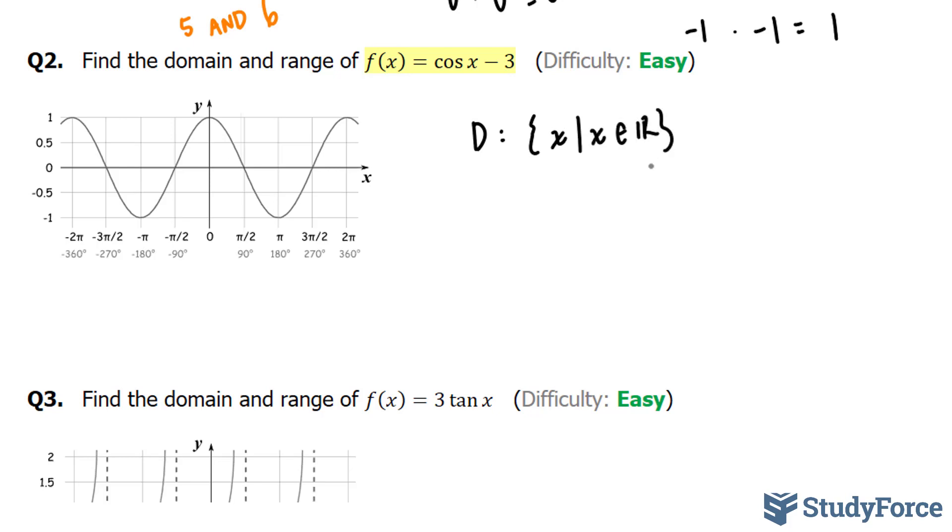But the range, on the other hand, given that we have this -3, means that every y value will be minused by 3. Therefore, since it is between 1 and -1, we subtract 3 from this and 3 from this,